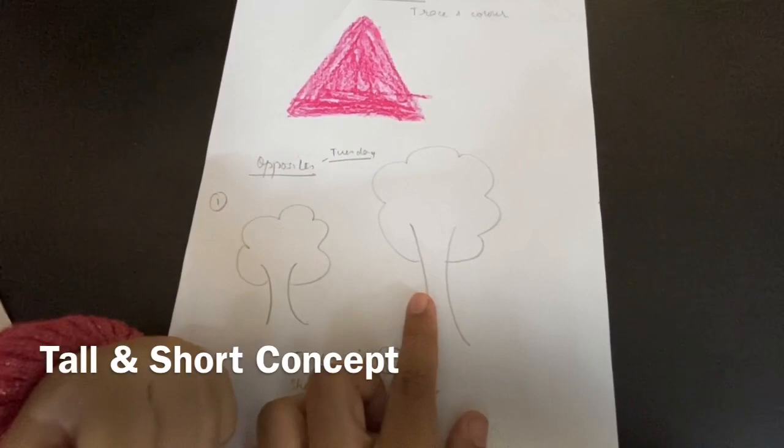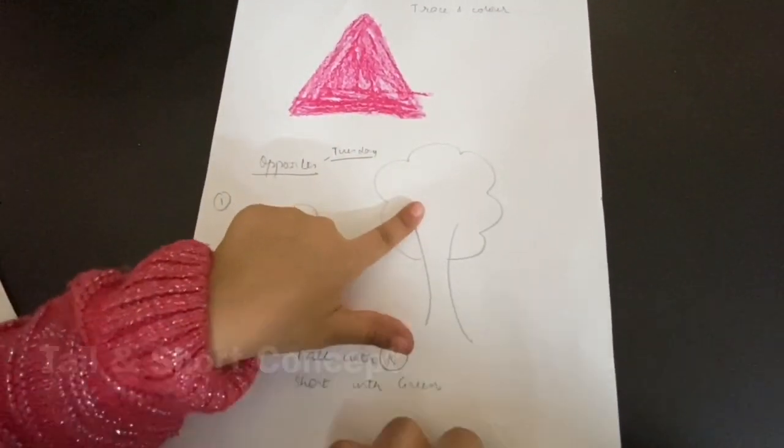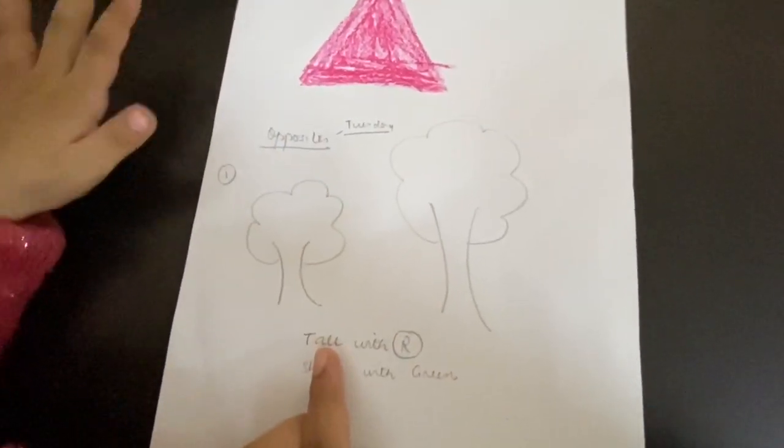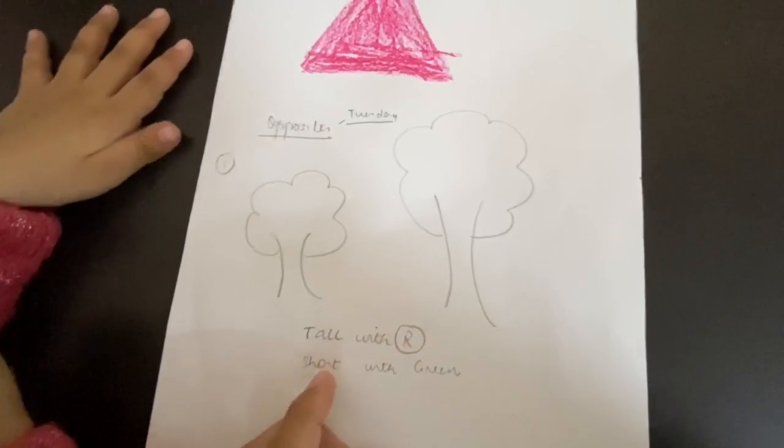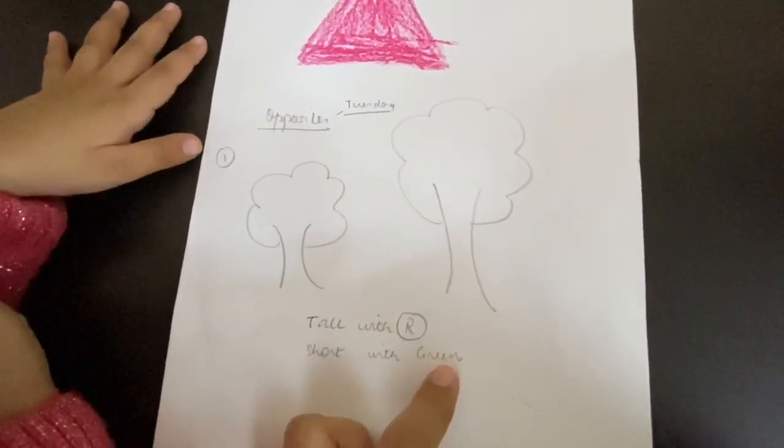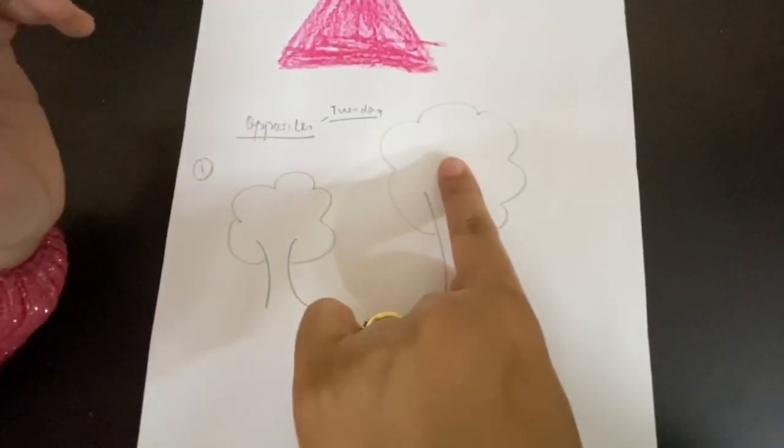Which tree is tall? This tree is taller or this tree is taller? Okay, and which one is shorter? This one. So you have to color the tall tree with red and the short one with green. Which one will you color with red? The tall one, the big one, you have to color with red.